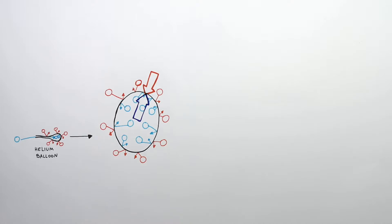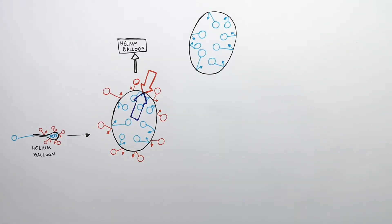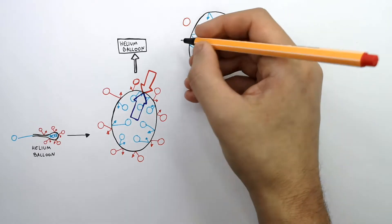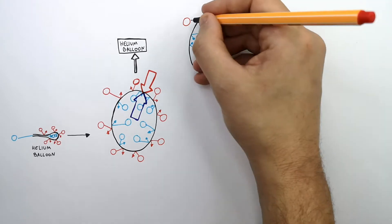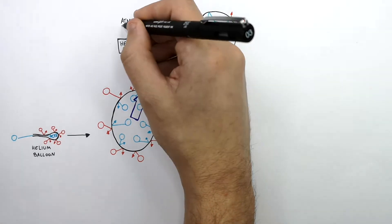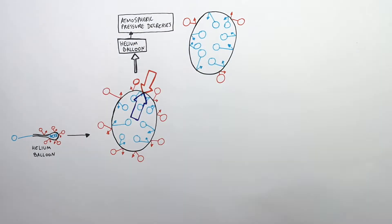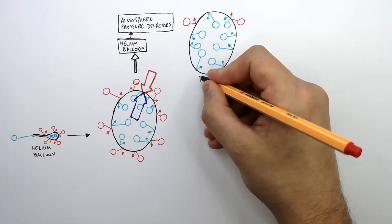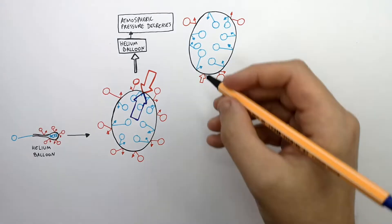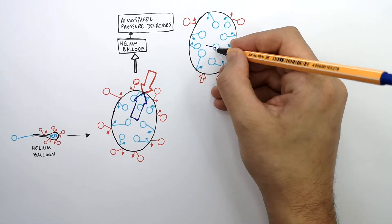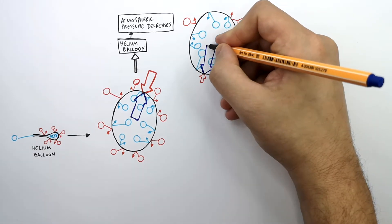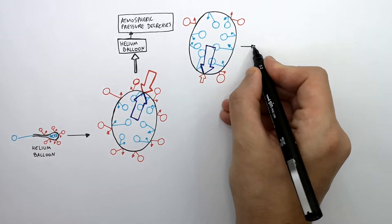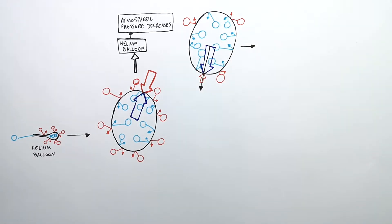Because helium is less dense than air, the helium balloon will rise. As the helium balloon rises to a much higher altitude, the density of the air particles decreases, so the atmospheric pressure decreases. As the atmospheric pressure decreases with height, the pressure outside the balloon decreases. Now there is a larger pressure from the particles inside the balloon than the atmospheric pressure outside, which will cause the balloon to expand.